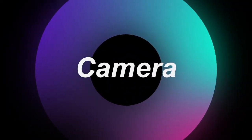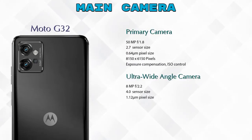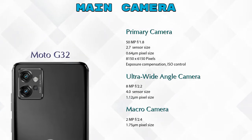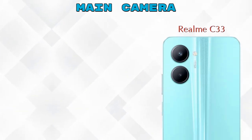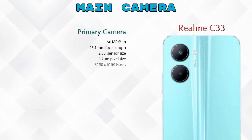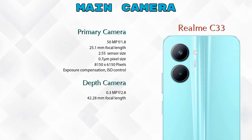Now let's see the details about our favorite feature — the camera. For the rear camera, the G32 has three cameras: a primary camera, an ultra-wide angle camera, and a macro camera. The Realme C33 has two cameras: a primary camera and a depth camera.